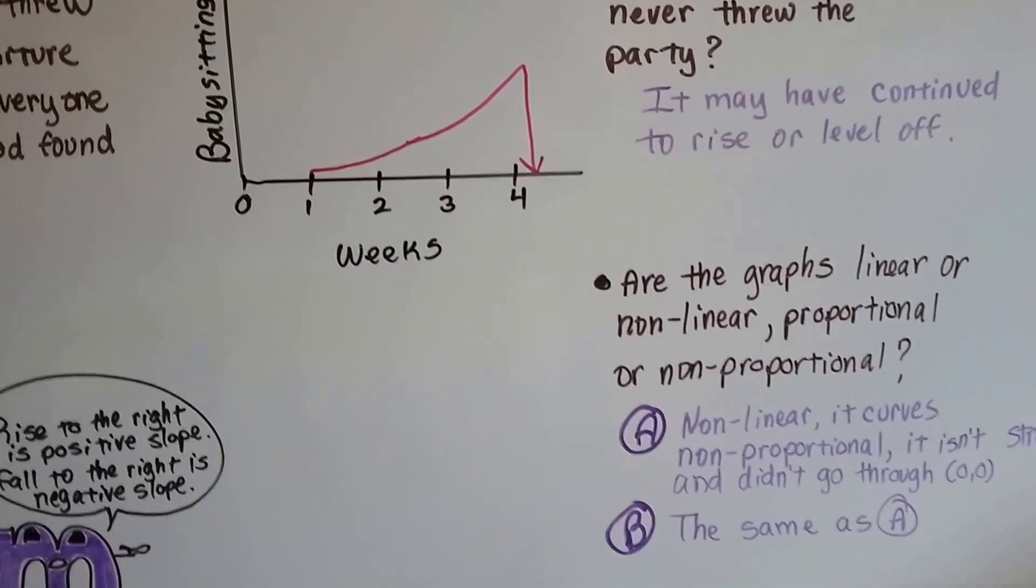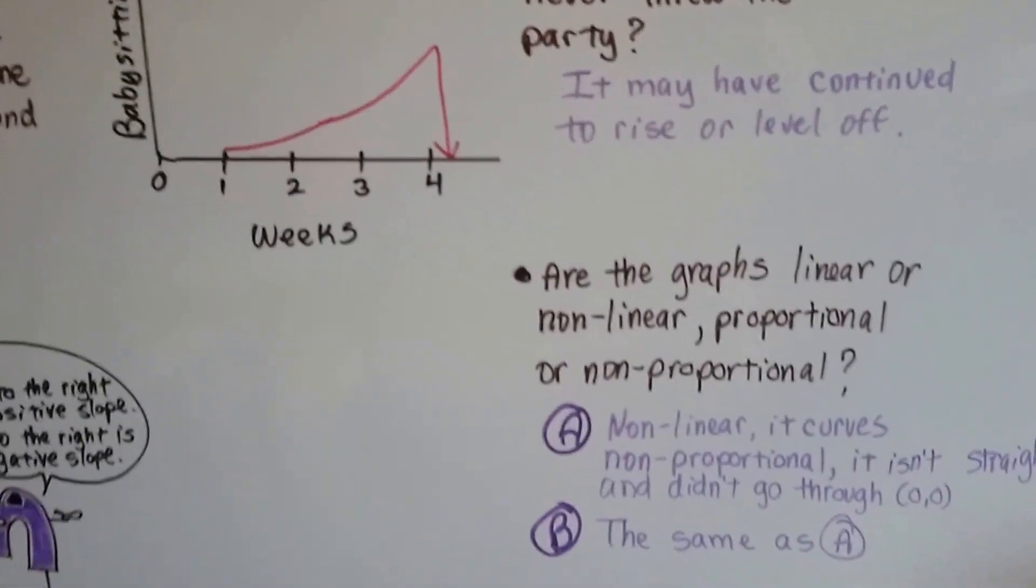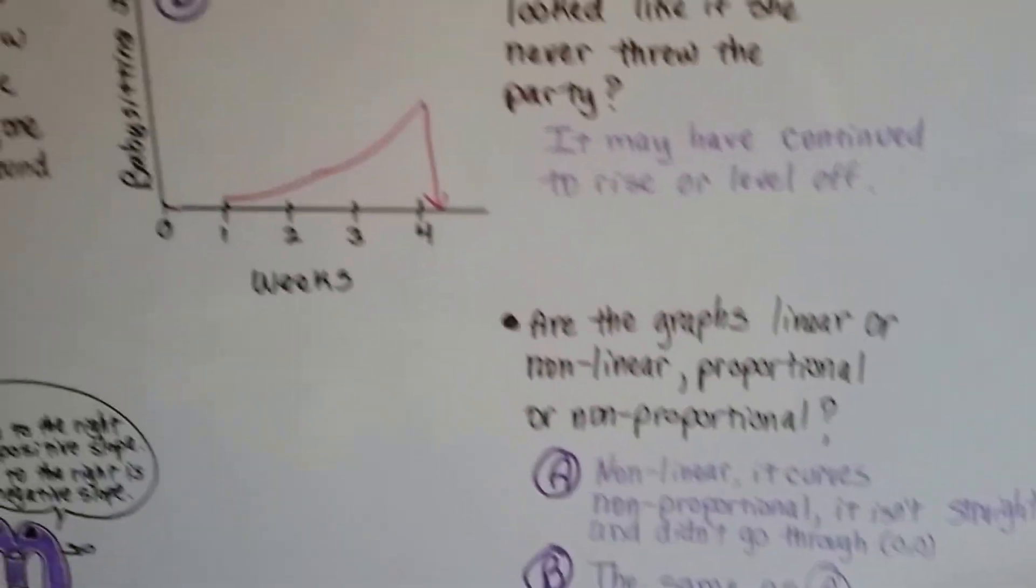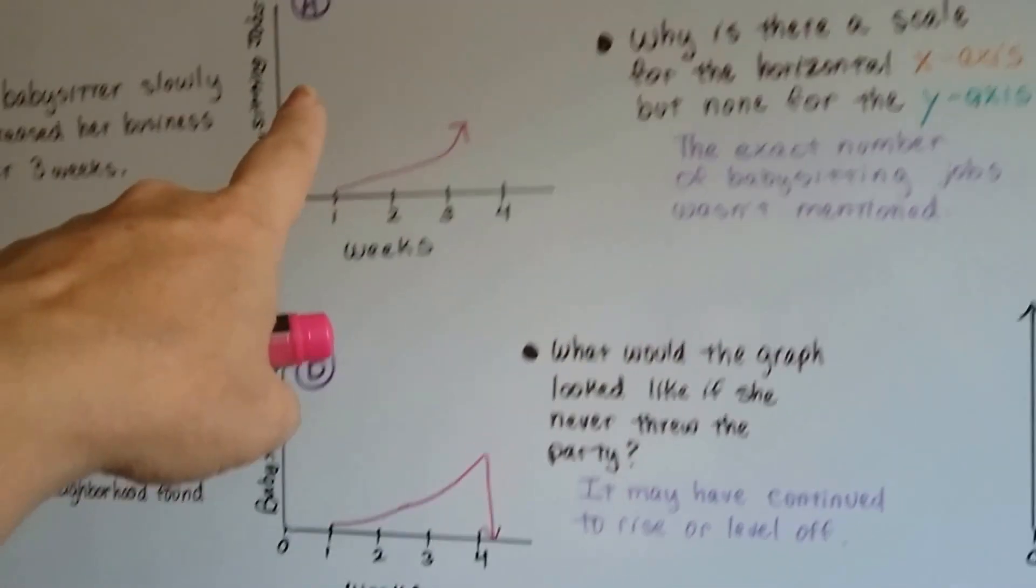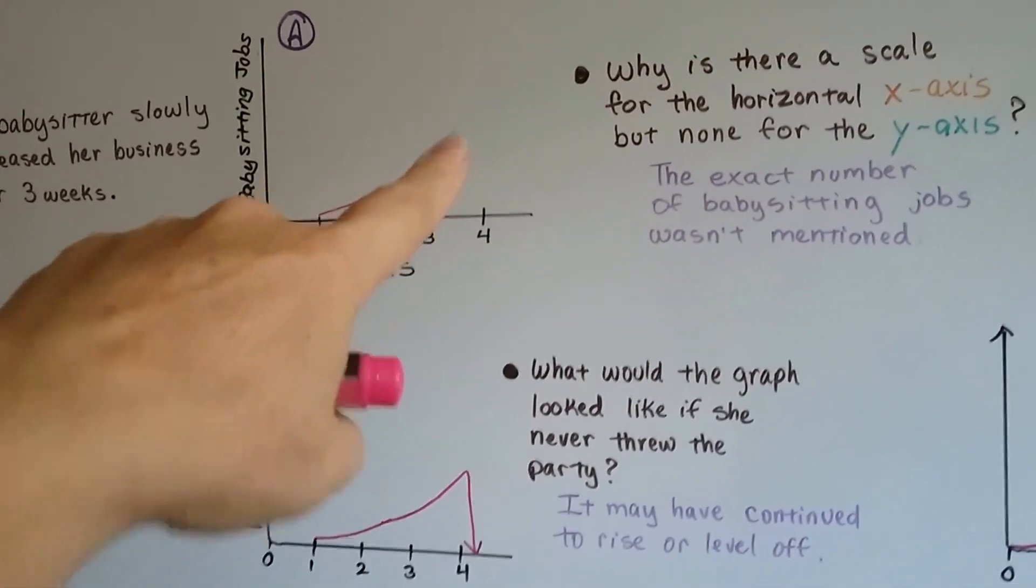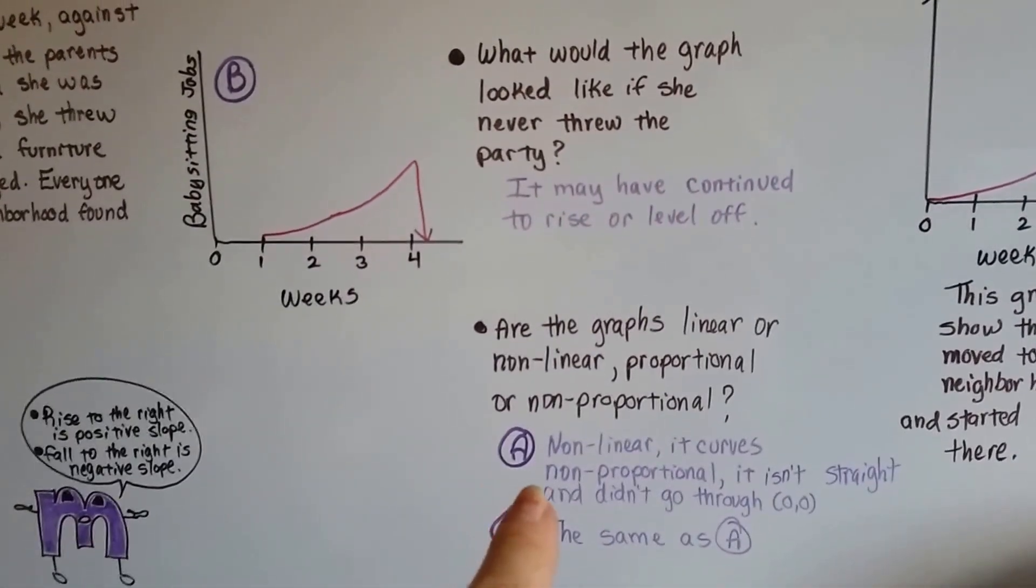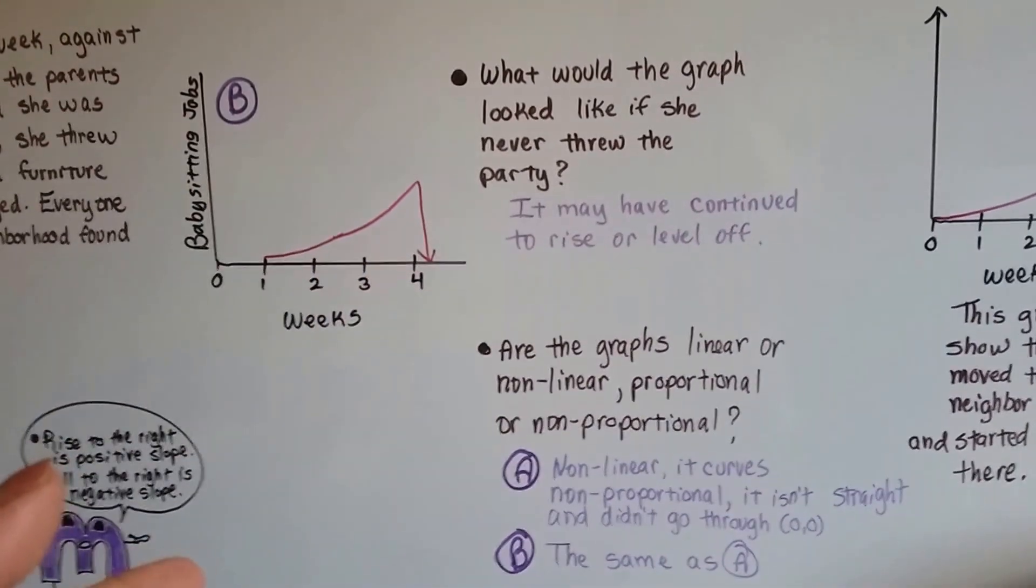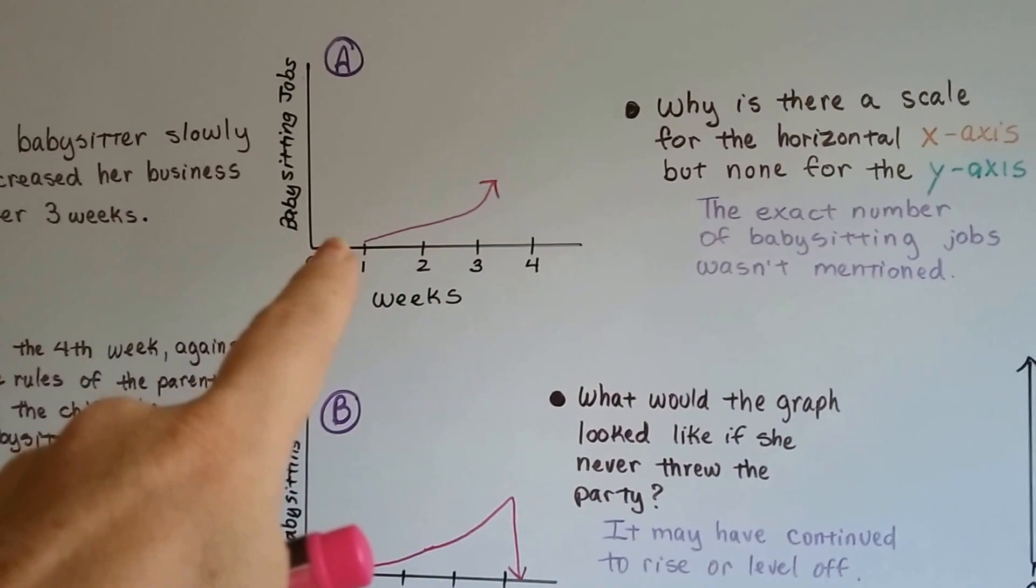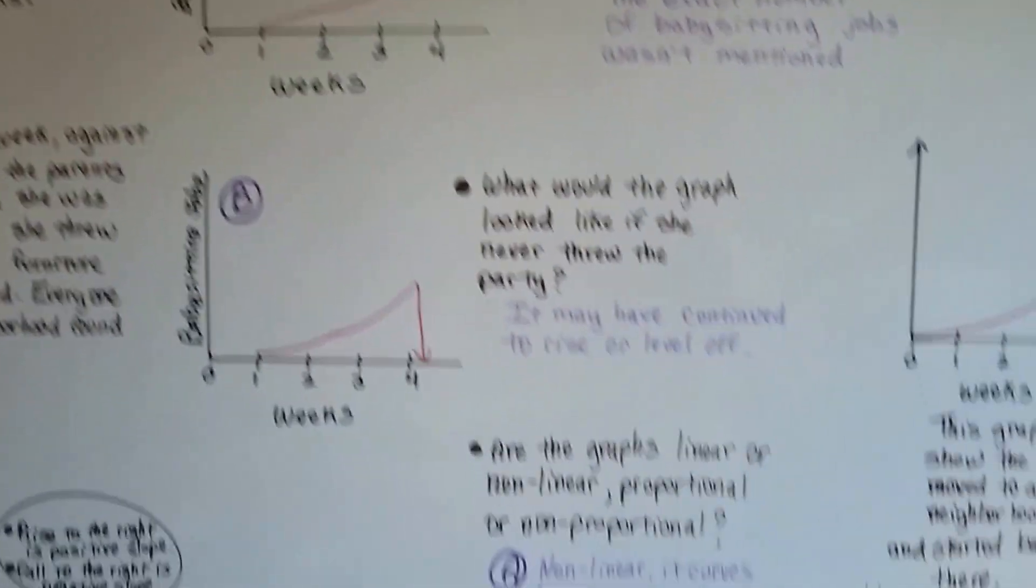And are these graphs linear or nonlinear, proportional or nonproportional? Well, graph a, right here, the one that's slowly rising, that one's nonlinear. It curves. It was slowly rising. And it's nonproportional because it's not straight and it doesn't go through 00. So it's nonlinear, nonproportional.